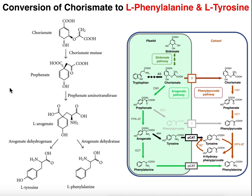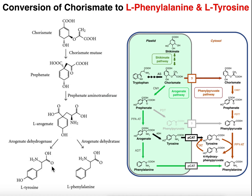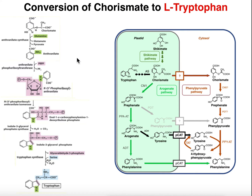Both chorismate synthesis and the conversion of chorismate to tyrosine and phenylalanine occur in an organelle called the plastid, at least in organisms that have a plastid, such as plants. Similarly, the conversion of chorismate to tryptophan, which is what we're going to look at in this video, is also a plastid process — and it's going to be a five-step enzymatic process.